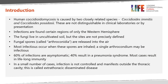By way of introduction, coccidioidomycosis is caused by two closely related species, Coccidioides imidus and Coccidioides posidaceae. These are not distinguishable in clinical laboratories or by their clinical presentation. Infections are found in certain regions of only the western hemisphere. The fungi live in uncultivated soil, but the precise sites are not well defined. Fungal spores, called arthroconidia, are released into the air, and most infections occur when these spores are inhaled by a susceptible host.